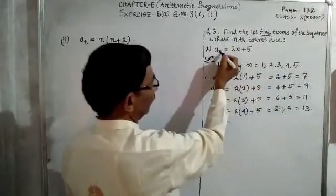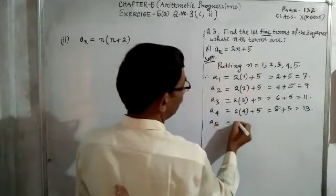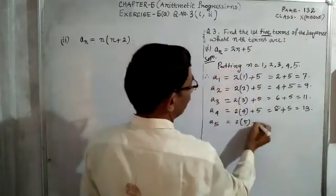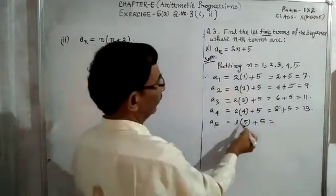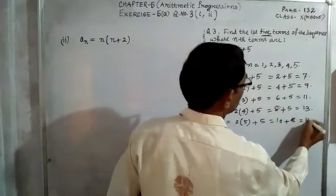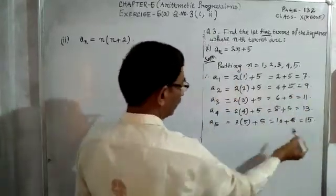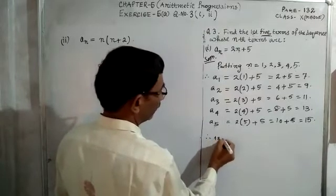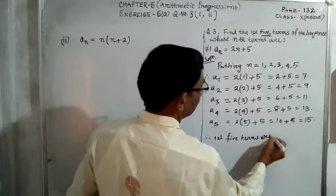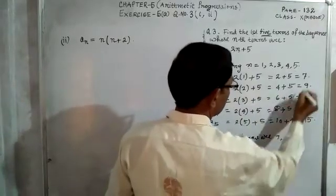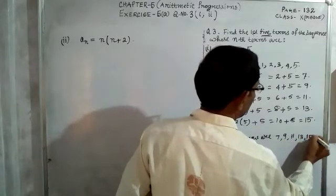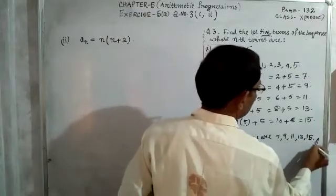And when n is equal to 5, a₅ = 2(5) + 5. 2 into 5 is 10, plus 5 is equal to 15. These are the first 5 terms. Therefore, the first 5 terms are: 7, 9, 11, 13, 15. That is the answer of the sum.